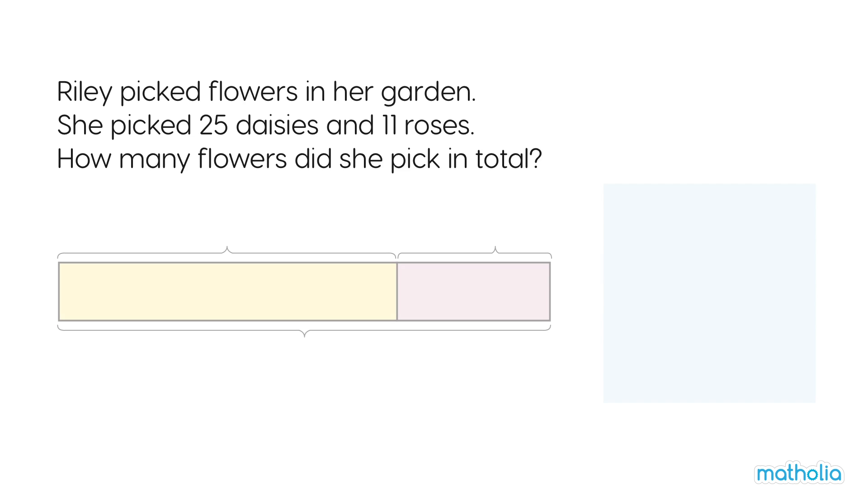Let's use a bar model to help find the answer. She picks 25 daisies. Write 25 here and label the bar. She picks 11 roses. Write 11 here and label the bar.